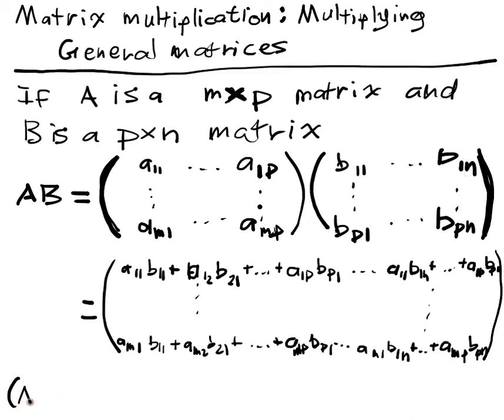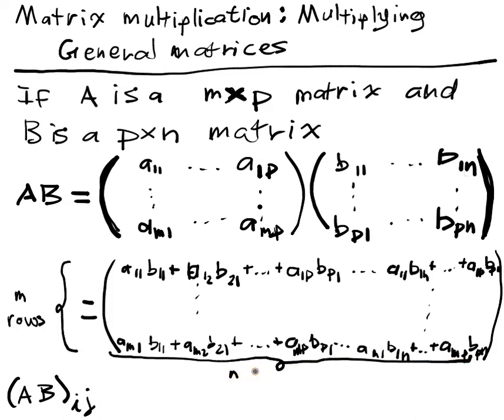And the general entry AB, say the ijth entry of this new matrix. So this is a new matrix and it's going to have exactly m rows and n columns. Well this guy is going to be just the sum from k equals 1 to p of Aik Bkj. So we just sum over these two adjoining indices, right? So it's the column index for A and it's the row index for B. And we sum over the multiples over those.